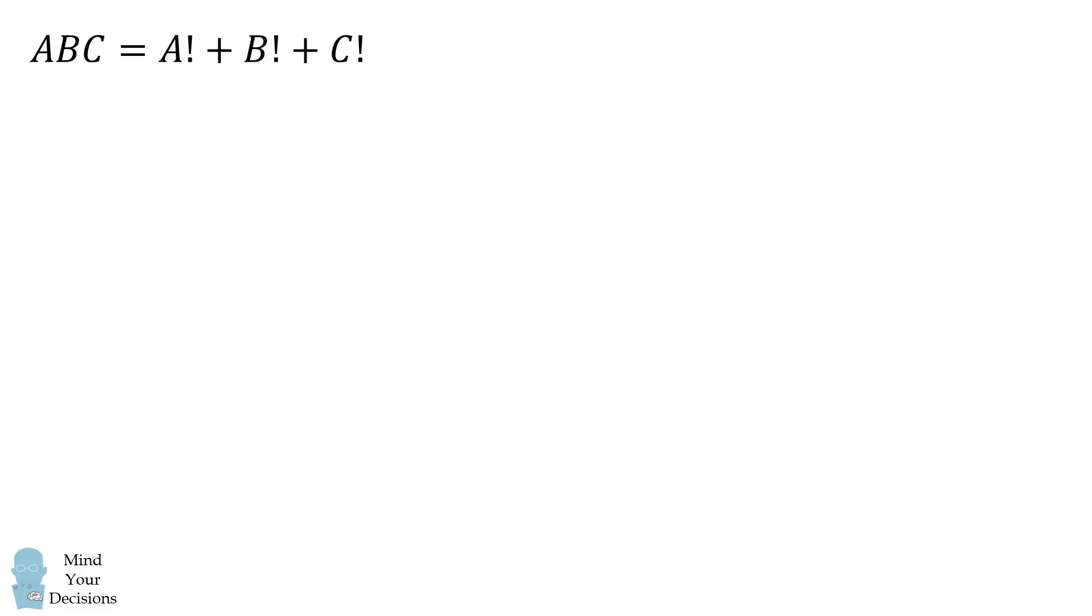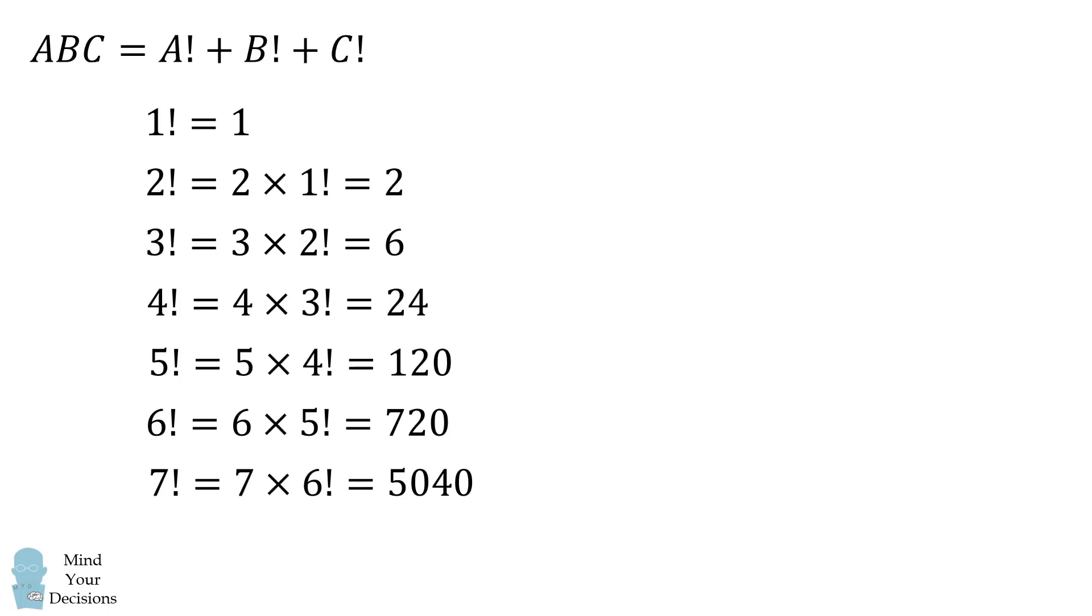So how can we solve this problem? We'll get started by listing out the factorial of each number starting at one. By the time we get to seven factorial there's something to notice.